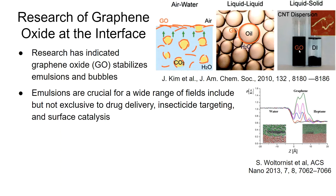As you can see on the left, the graphene oxide shows dispersion, while on the right, the solid merely sinks to the bottom and does not disperse.